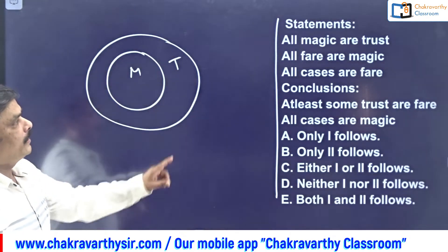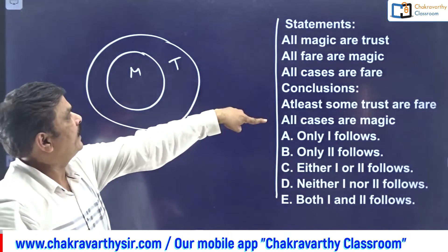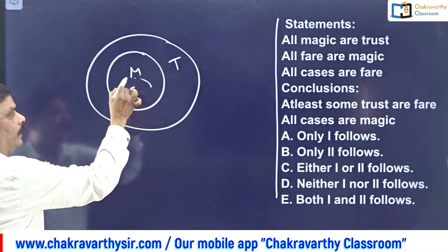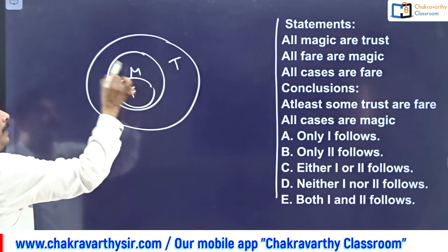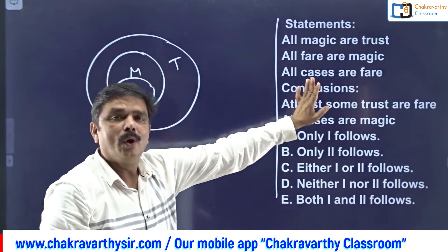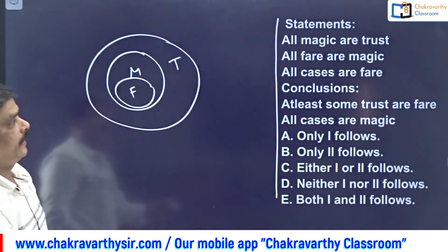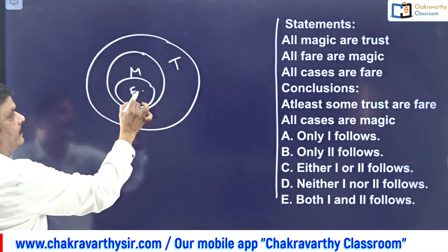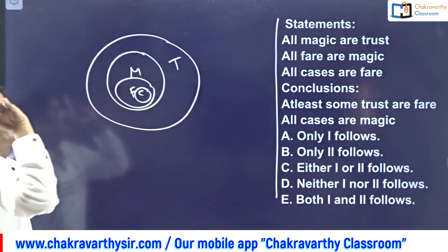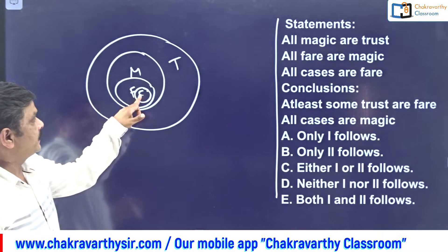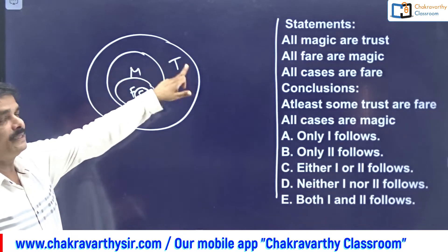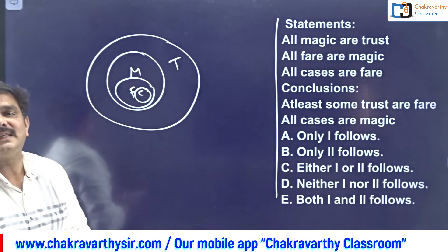Drawing the basic diagram: All magnetic are trust - inside T. All fair are magnetic - F inside M. All cases are fair - C inside F. So C is a subset of F, F is a subset of M, and M is a subset of T.